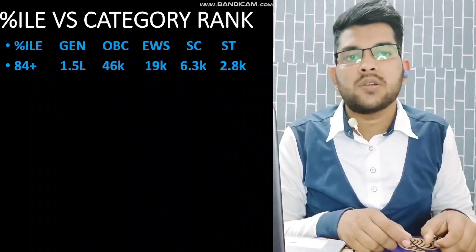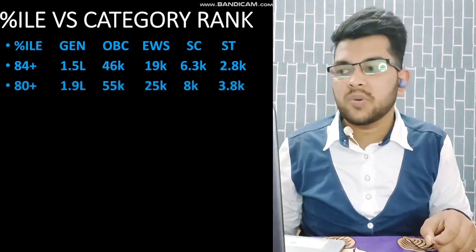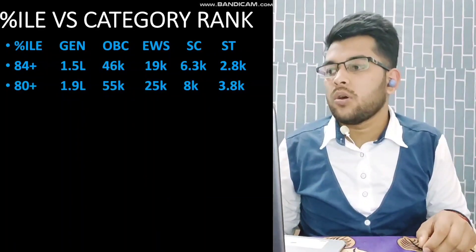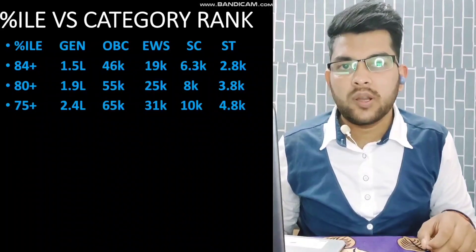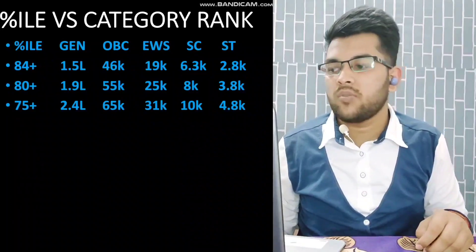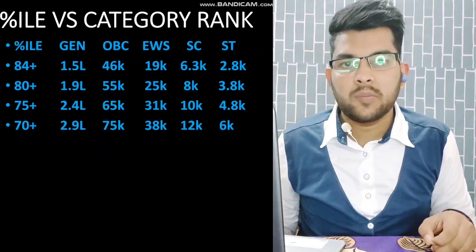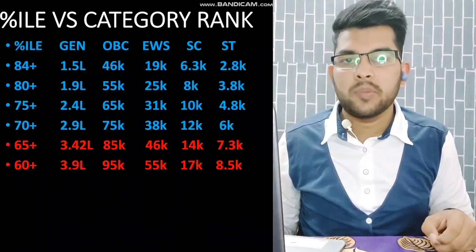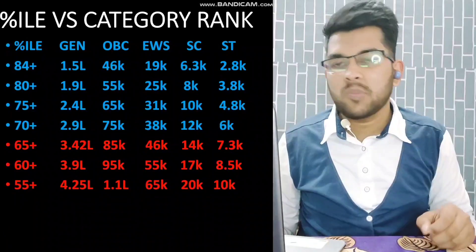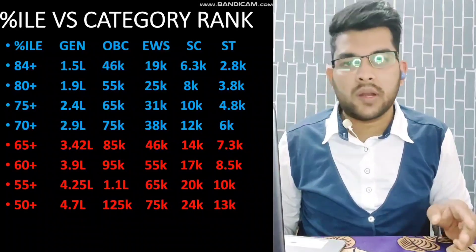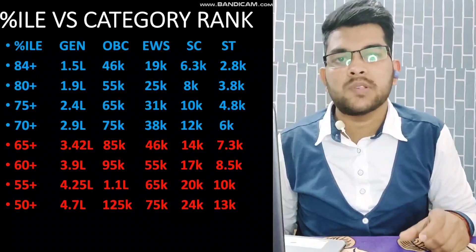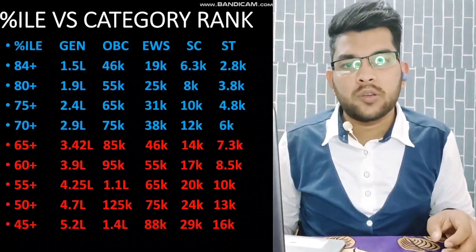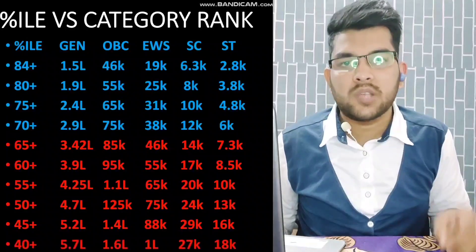For 80+ percentile: General rank under 1.5 lakh — check the side table by pausing the video for other categories. For 75+ percentile: CRL under 2.4 lakh. For 70+ percentile: under 2.9 lakh. For 65+ percentile: under 3.42 lakh. For 60+ percentile: 3.9 lakh. For 55+ percentile: 4.25 lakh. For 50+ percentile: CRL 4.7 lakh. For PWD candidates, please watch my previous video which has complete PWD-specific information. For 45+ percentile: rank 5.2 lakh.